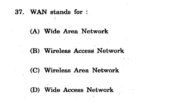Question 37: WAN stands for? Options: Wide Area Network; Wireless Access Network; Wireless Area Network; Wide Access Network. The correct option is A - Wide Area Network, because WAN provides internet across a wide area. WAN = Wide Area Network.